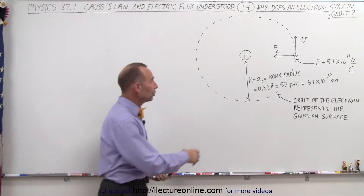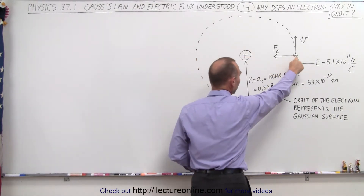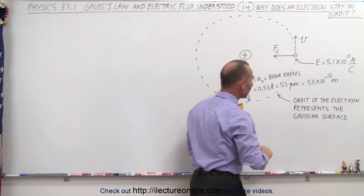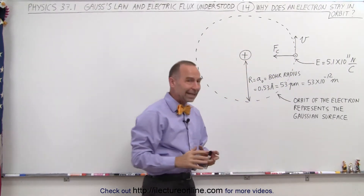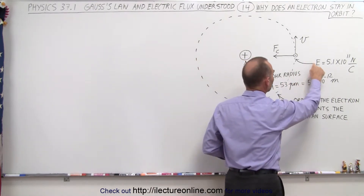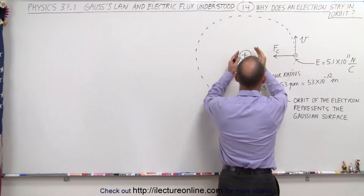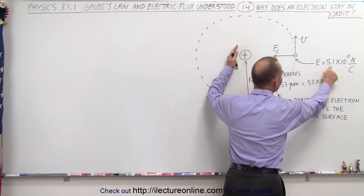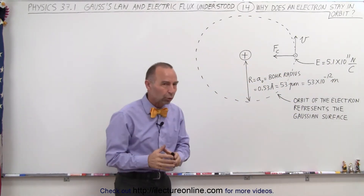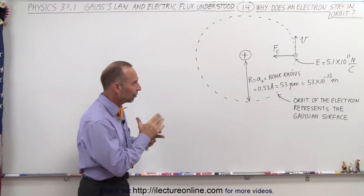So here we have the nucleus, which is the proton, and we have a small electron some distance away, zipping around that proton pretty quickly. In the previous video, we realized that the electric field strength at the location of the electron, due to the proton, is equal to 5.1 times 10 to the 11th newtons per coulomb — an enormously powerful electric field.